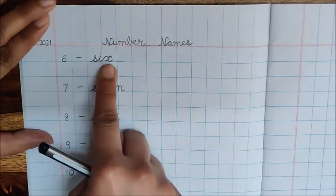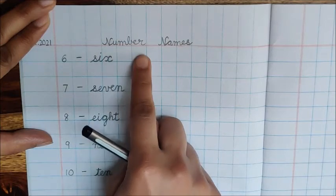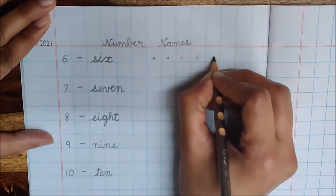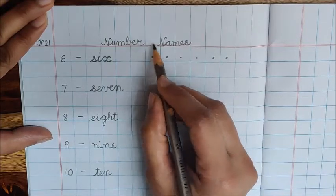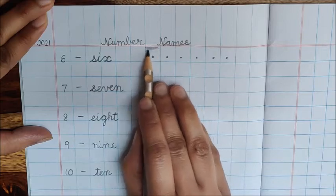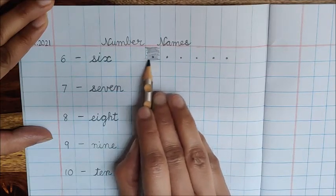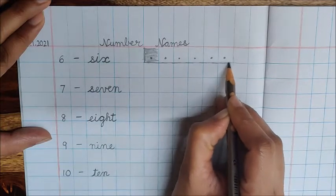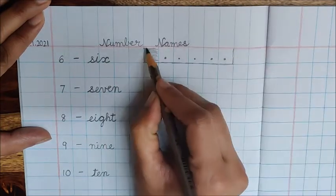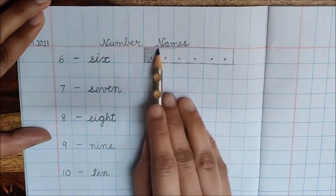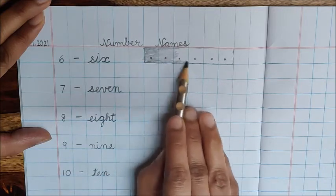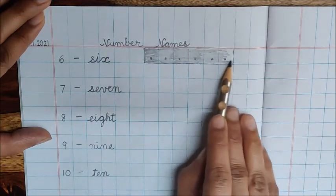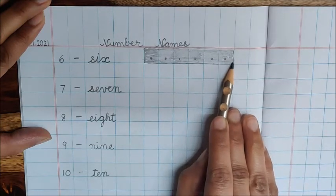What number is this? 6. So after the spelling, leave 2 boxes, 1, 2, and after 2 boxes make 6 dots: 1, 2, 3, 4, 5, and 6. Now do shading. How to do shading? I taught you. You have to keep your pencil like this and do shading. First trace the boxes, okay? Then you will know your area within which you have to do shading. Now do the shading. It's done.